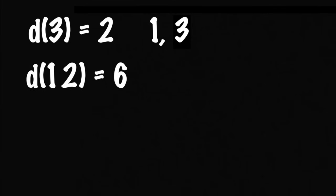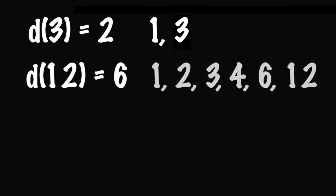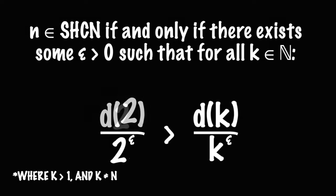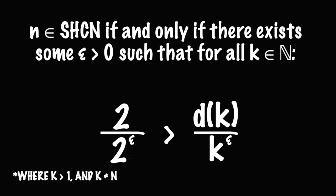So for example, d(3) is 2 because 3 only has 2 factors, 1 and 3, whereas d(12) is 6 as 12 has 6 factors: 1, 2, 3, 4, 6, and 12. So if we look back at our setup here, d(2) should be 2 since 2 has exactly 2 factors, 1 and 2.